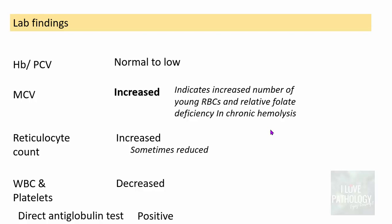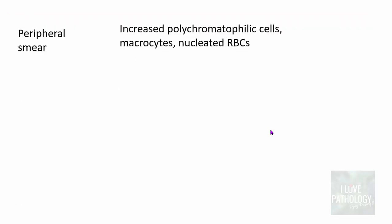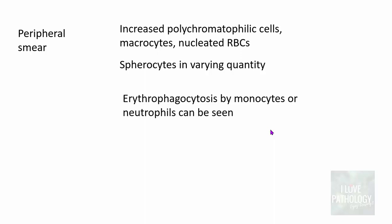WBC and platelets may be decreased. Importantly, the direct antiglobulin test is always positive. Peripheral smear findings include increased polychromatic cells — hence the elevated MCV — as well as macrocytes and nucleated RBCs. Spherocytes can be seen in varying quantities due to membrane loss from partial phagocytosis.